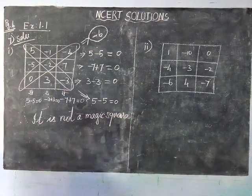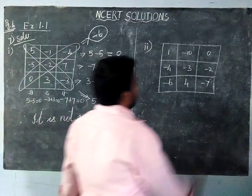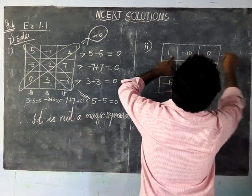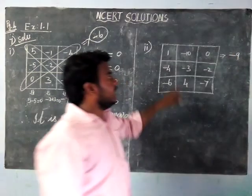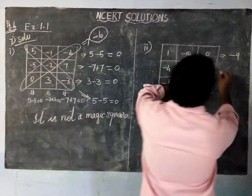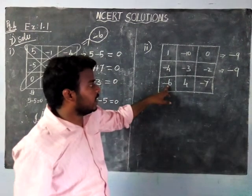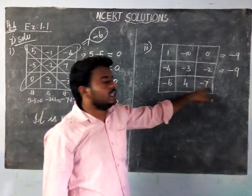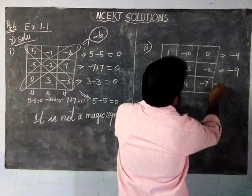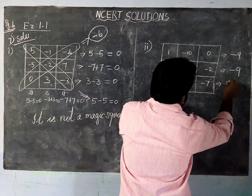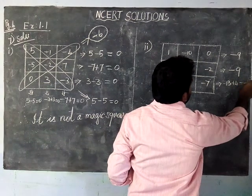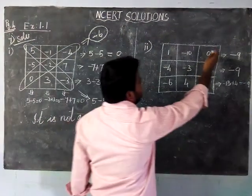It is not a magic square. Now we apply the same rule to the second subdivision. Checking rows: one minus ten — one is positive, ten is negative, difference is minus nine. Next, all digits are negative: minus four, minus three, minus two — adding all negatives gives minus nine. Next row: minus six, plus four, minus seven — adding the negatives first: minus seven plus minus six equals minus thirteen, then plus four gives minus nine.